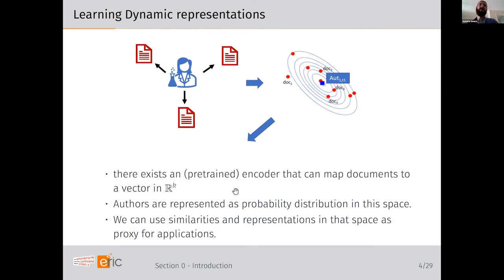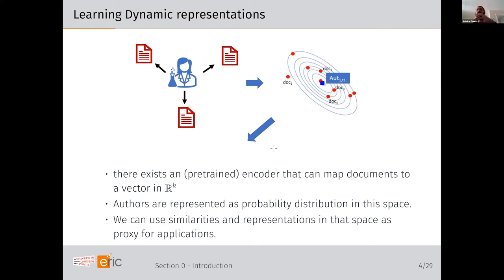We consider a pre-trained encoder that maps documents to vectors in R^k. Using this encoder, we learn author representations as probability distributions in the pre-trained document space. We do this because we want to measure variability in an author's textual content and topics of interest. Using Gaussian modeling, you get a measure of variance in the latent space correlated with the variability of their topics. These representations can then be used as proxies for recommendation and classification via similarity measures.